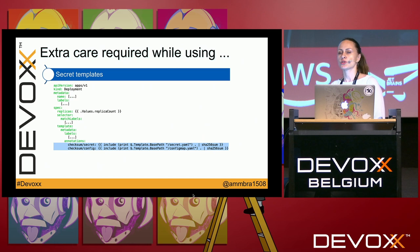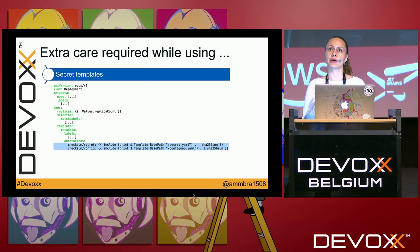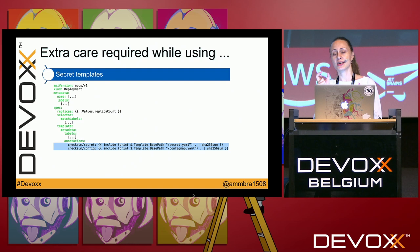Extra care is also required when using secrets — don't hard-code things in secrets. There are ways to use Vault with Helm for this. The checksum annotation that checks for changes in secret or config map values is very useful and was introduced by Helm — it's not in standard Kubernetes YAML. It re-triggers pod creation when values change, and you can use as many checksum annotations as you want by giving them different names.